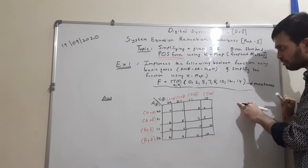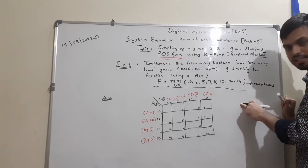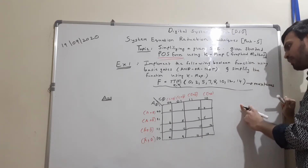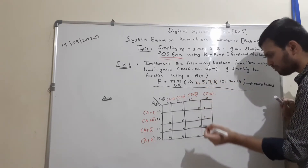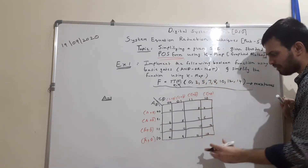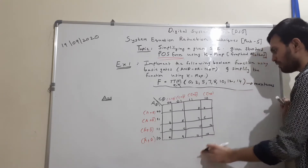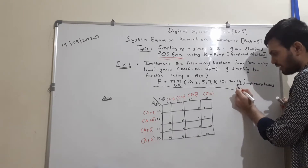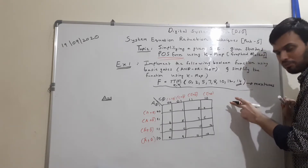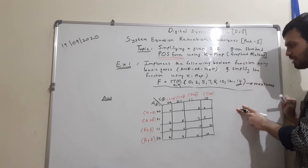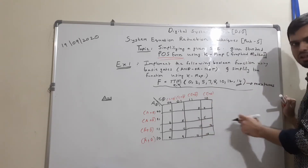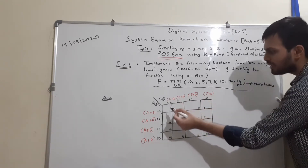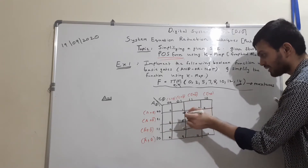We are supposed to simplify it using KMAP and then realize it using basic gates — AND, OR, and NOT gates — after simplification. The max terms are 0, 2, 5, 7, 8, 10, 12, 14. Now let us start filling the KMAP. This is a 4-variable KMAP, because the maximum value of the max terms goes up to 14, so the KMAP must contain at least 14 cells — which is only possible with a 4-variable KMAP that has 16 boxes.